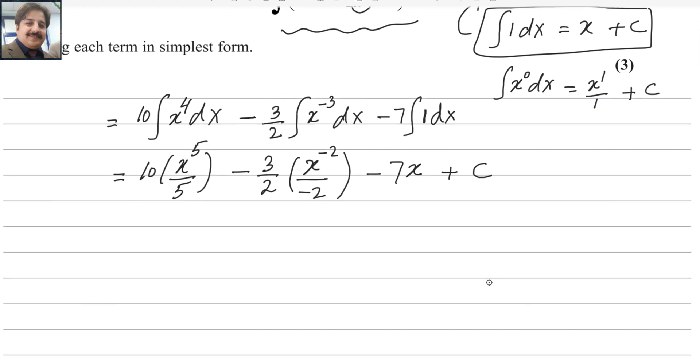In the next step, you have to simplify this. 10 will be simplified with this one. The answer will be 2 because 10 divided by 5 is 2. And this minus and that minus makes it plus. The first value will be 2x power 5.